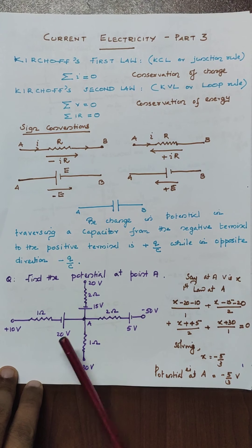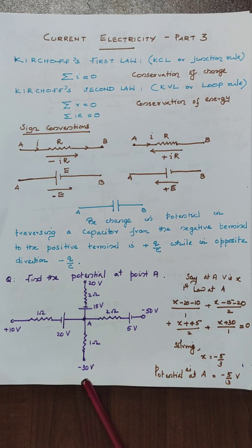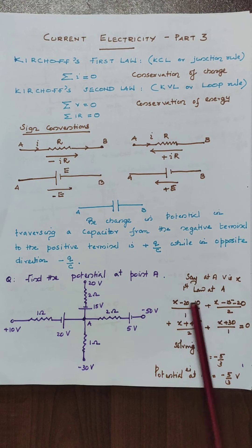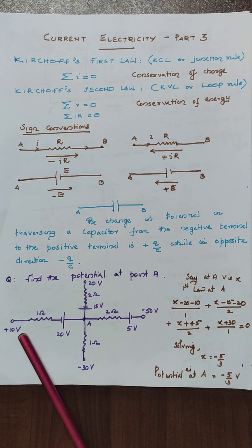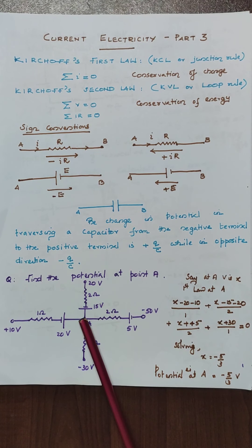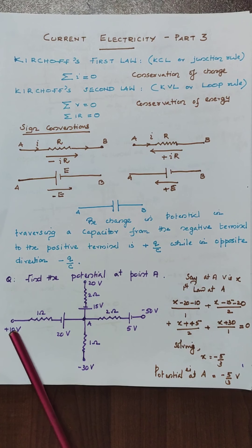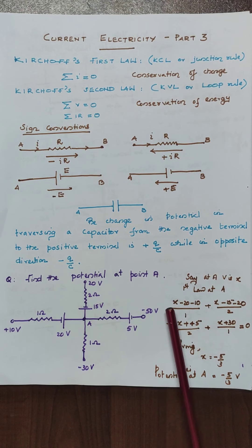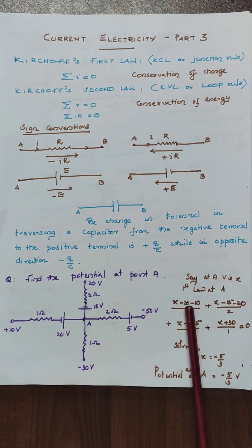Say at the point A, there is a potential of X. The potential by the resistance — suppose we consider this first case. The current will flow like this. In effect they are moving like this one. So we can say X minus 20 minus 10 by the resistance as 1, plus...